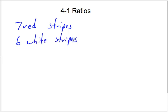Now we can put this into a ratio, which is a comparison with division. The most common way that you're going to see it in this book is as a fraction. So seven over six, and that would be like red over white equals seven over six. Another way that you might see this written is seven to six.